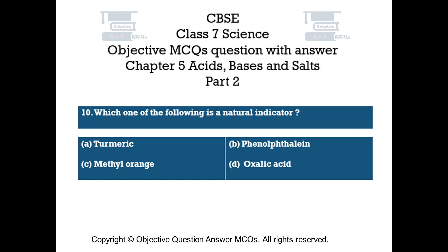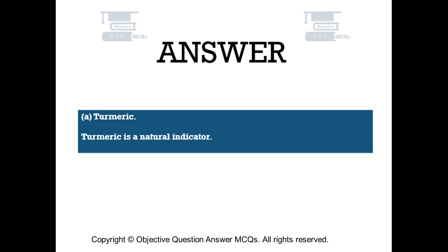Question number 10. Which one of the following is a natural indicator? Option A: turmeric. Option B: phenolphthalein. Option C: methyl orange. Option D: oxalic acid. The right answer is option A — turmeric. Turmeric is a natural indicator.